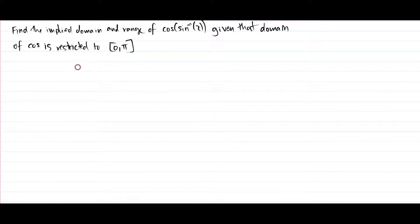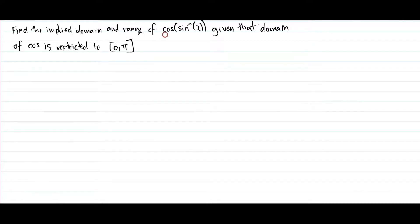Hey, what's up everyone? If you've regularly been doing your textbook exercises for Specialist Maths 3-4, you would have probably encountered this question in Chapter 2, which is Circular Functions: Find the implied domain and range of cos(sin⁻¹x), given that the domain of cos is restricted to 0 to π. This is an unusual question and it is very hard, which is why I'm doing a video on this.